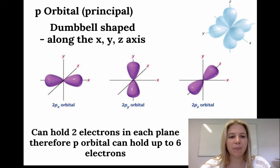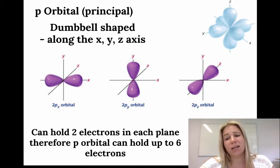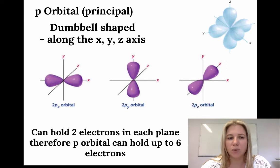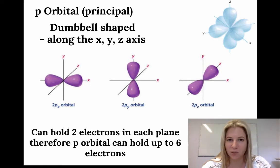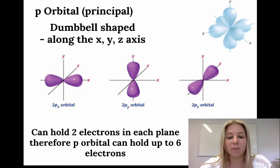The p orbital has dumbbell shapes and they occur along the x, y, and z axes — giving us the px, py, and pz orbitals. This also reminds us that we're working in 3D space, not 2D — another limitation of the shell model. Each p orbital along each axis can hold two electrons, so together all three p orbitals can hold up to six electrons.